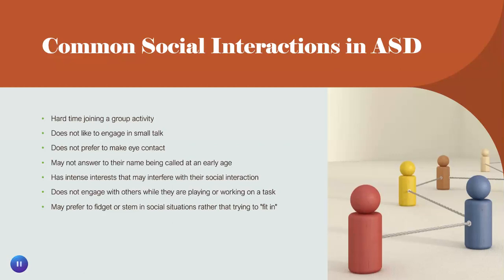They may prefer to fidget or stim in social situations rather than trying to quote-unquote fit in. From a neurotypical perspective, this can look awkward or not socially acceptable. However, the autistic individual may feel uncomfortable in that situation, and stimming or fidgeting can be a way to bring comfort — even if it is perceived negatively by others.